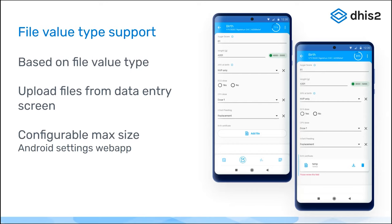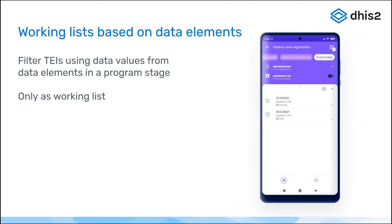Moving to the next feature: working lists. Marcus will tell us more about this later with Tracker, but there are working lists now that allow a seamless version where you can select data elements as well for your working lists, in addition to attributes. The Android app now reads those working lists. Working lists have to be configured on the web side with the Capture app, but the Android app downloads them and offers them to the user in the top bar together with the filters.